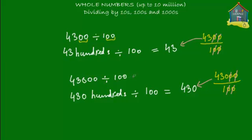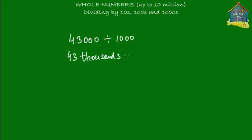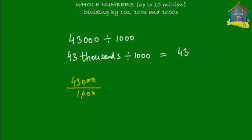We'll do one more — dividing by thousands. Say we have 43,000 and that's to be divided by 1,000. How many thousands are there in 43,000? There are 43 thousands in 43,000 — so the thousands and thousand get cancelled out, and you're left with just 43. If you do it by cancelling zeros: there are three zeros in 43,000 and three zeros in 1,000 — so the three zeros get cancelled out, one, two, three against one, two, three — and all that's left is 43.